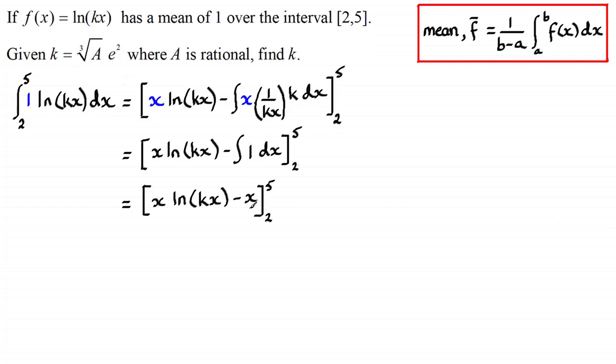And what I'm going to do next is just substitute my limits in. If I substitute my limits in I'm going to get this result. Then I'm going to tidy this up. Bring the 5 up. So it's going to be the natural log of all of 5k to the power 5 and minus natural log of 2k all to the power 2. And then you've got the minus 5 plus the 2 there gives us the minus 3.